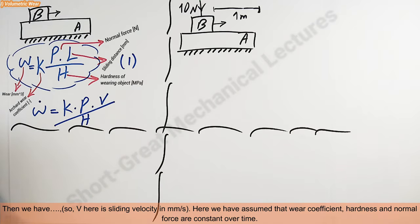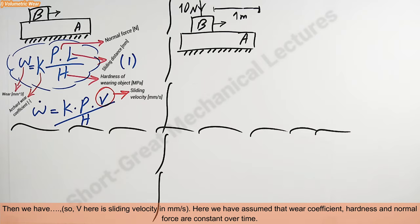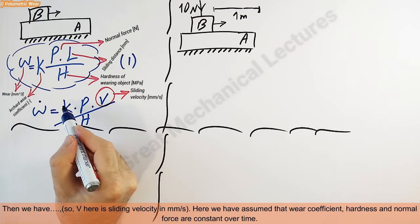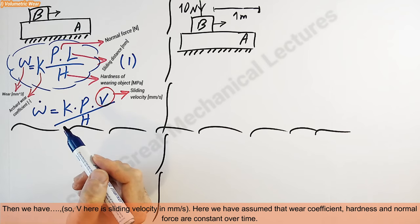So v here is sliding velocity in millimeter per second. Here we have assumed that wear coefficient, hardness, and normal force are constant over time.